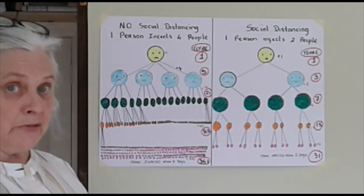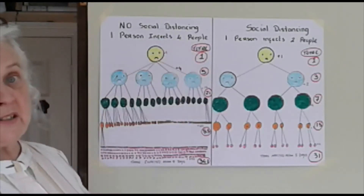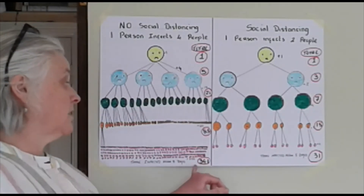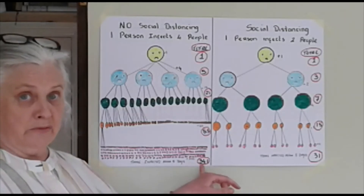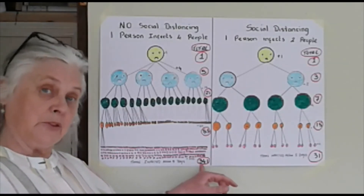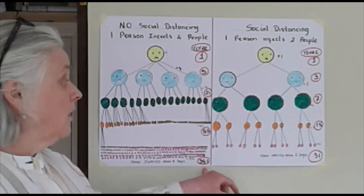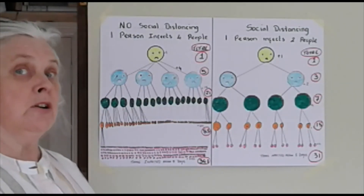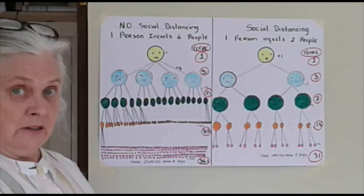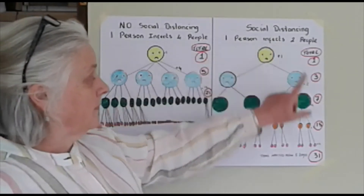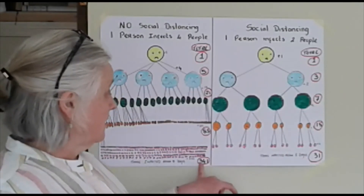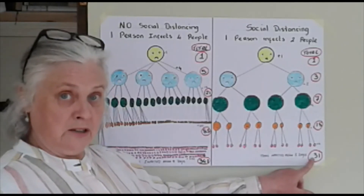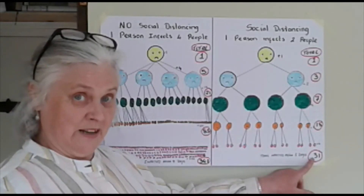Now let's look back at the first graph. One person infects four people — most people, if you asked them quickly, would say there'll be 341 after five days. If one person only infected two people, most people would quickly say around half that — around 170. Well, you'd be wrong, because when we look: this is 341 after five days versus only 31. Ten times less.